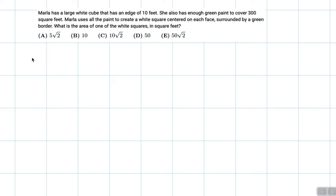Marla has a large white cube that has an edge of 10 feet. She also has enough green paint to cover 300 square feet. Marla uses all the paint to create a white square centered on each face, surrounded by a green border. What is the area of one of the white squares in square feet?